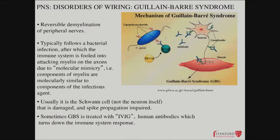With supportive care given — and these patients can in some cases require mechanical ventilation to allow them to continue breathing — eventually this immune system flare-up dies down. Myelin is recreated, the Schwann cell re-insulates the peripheral nerves, and everything goes completely back to normal, which is amazing. Sometimes you can accelerate the recovery by infusing IVIG — a very dense cocktail of human antibodies or immunoglobulins — which might help effectively distract or saturate the immune system attack away from antibodies stuck to the myelin or the Schwann cell.